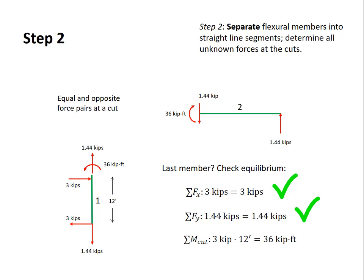If I sum moments about the cut I have 3 kips acting over a 12-foot moment arm. That's equal to the 36 kip feet that I already carried over. So these are three independent checks. They all check out, I'm confident with my work and I can now move on to step 3.